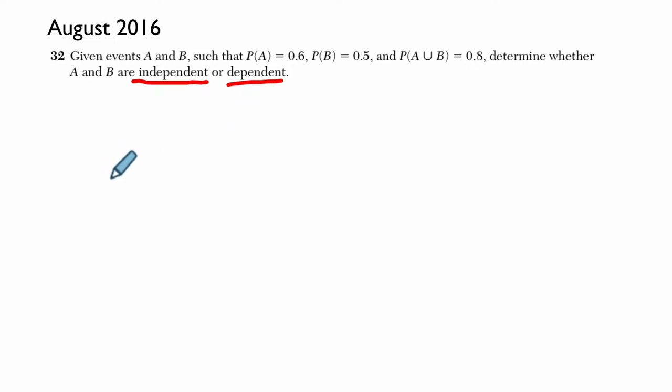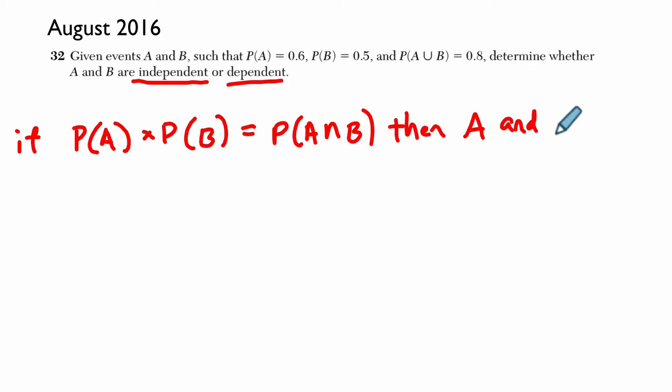Now, it turns out that there are a couple of basic definitions you need here. If the probability of A times the probability of B equals the probability of A and B, then you know that A and B are independent.